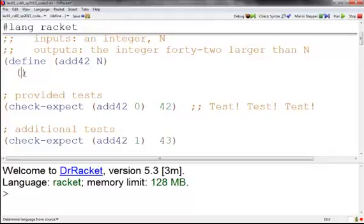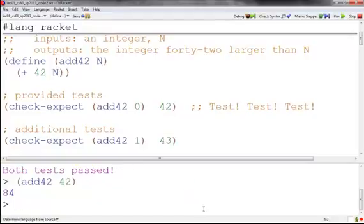To fill in the body, I'm going to say plus 42 and n. And then I can run this code and my two test cases will both pass because they return the right answer. And once I run it, I can test it down here. Add 42 to 42 and I get 84.